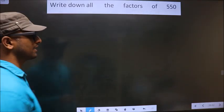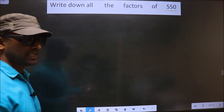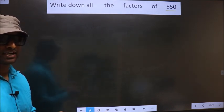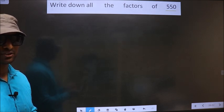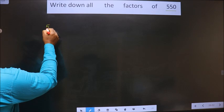Write down all the factors of 550. To write all the factors of 550, first we should do the prime factorization of it. So let us do. That is 550.